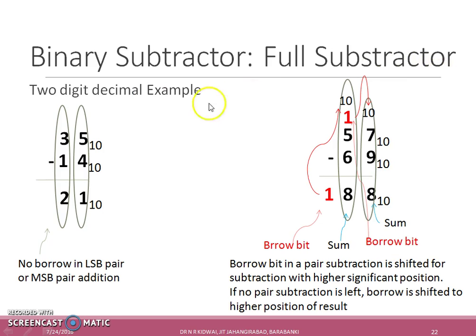The full subtraction concept can be explained by giving a two-digit decimal example. If in any pair of subtraction the first number is greater than or equal to the second number, then no borrow is required. Otherwise, a borrow from a higher position is required as shown here.